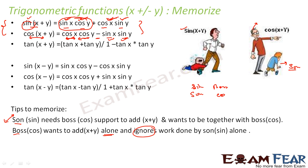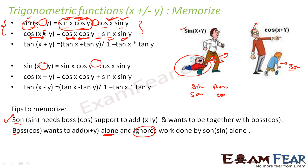So that is the tip: son needs boss support because son is always needy, while boss wants to do things alone — cos x cos y — and ignores the son's contribution, giving the negative sign. For the subtraction formulas, just replace: wherever you had a positive sign, make it negative, and vice versa. So cos(x+y) has a negative, and cos(x−y) becomes positive.